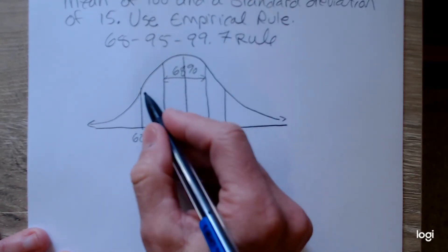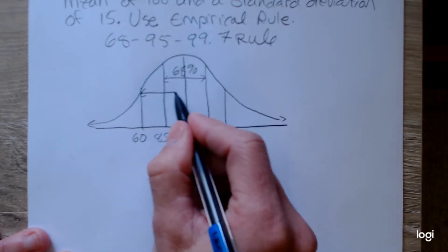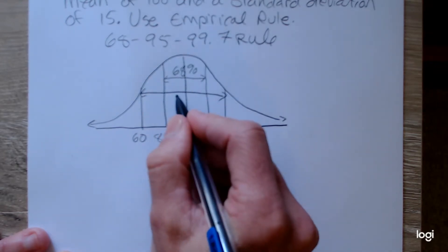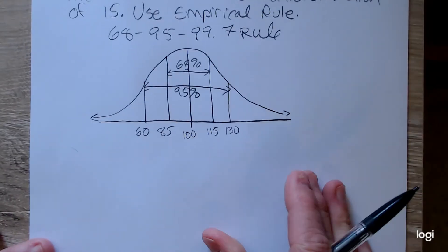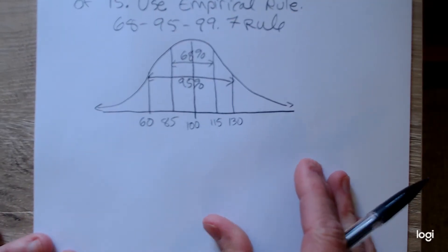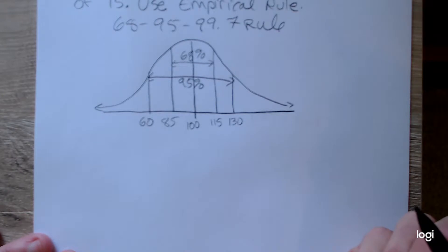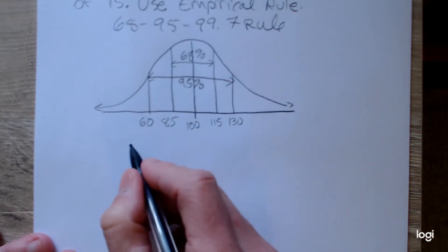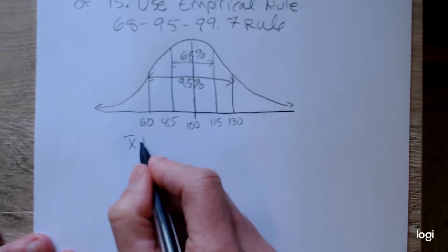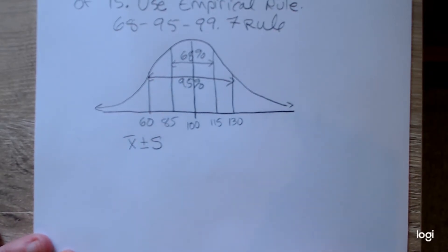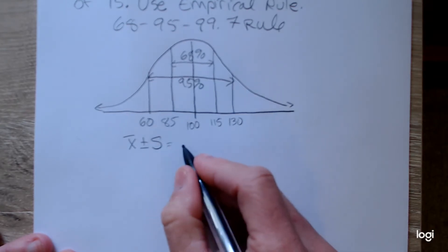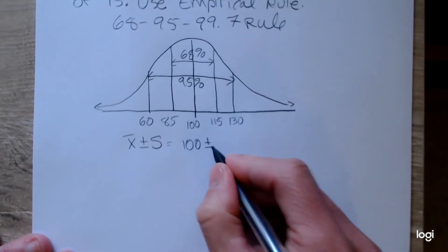So the empirical rule says that 95% of the values are captured between two standard deviations of the mean. So, in notation, I have x-bar plus or minus s. That's the interval for one standard deviation from the mean. So that would be 100 plus or minus 15.